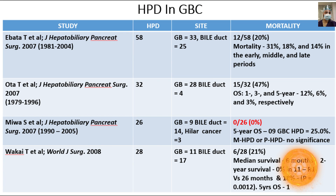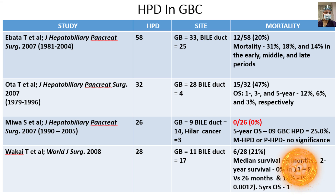Several landmark papers have reported outcomes after HPD — hepatopancreaticoduodenectomy — in gallbladder cancer, though the data is combined with bile duct and hilar cancers. Mortality rates across studies ranged up to 47%, with the study by Otta et al. showing the highest mortality, which also had the highest proportion of gallbladder cancer patients. Other studies with more bile duct or hilar cholangiocarcinoma patients reported more favorable outcomes.